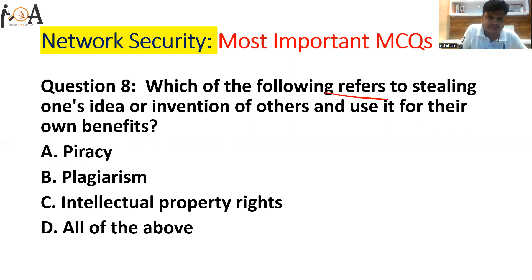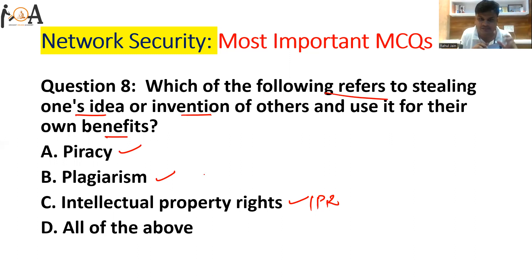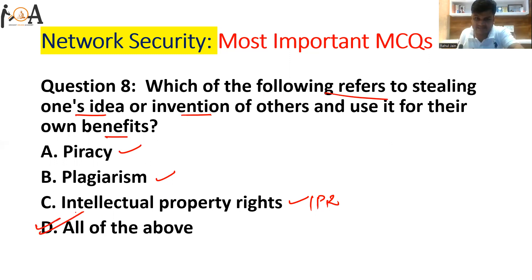Question number eight: which of the following refers to stealing one's idea or invention and using it for your own benefit? This is called piracy, plagiarism, or intellectual property rights violation — IPR. When an idea given by someone else is used without their permission and without crediting them, for your own benefit, that falls under piracy, plagiarism, or intellectual property rights. So all of the above is the correct answer.